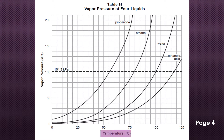Looking at Table H: the x-axis shows temperature in degrees Celsius and the y-axis shows vapor pressure in kilopascals. On the x-axis we see values of zero and 25, with five boxes between them. To find the interval for each box, we divide 25 by 5, giving an interval of 5 — so each box represents 5 degrees Celsius.